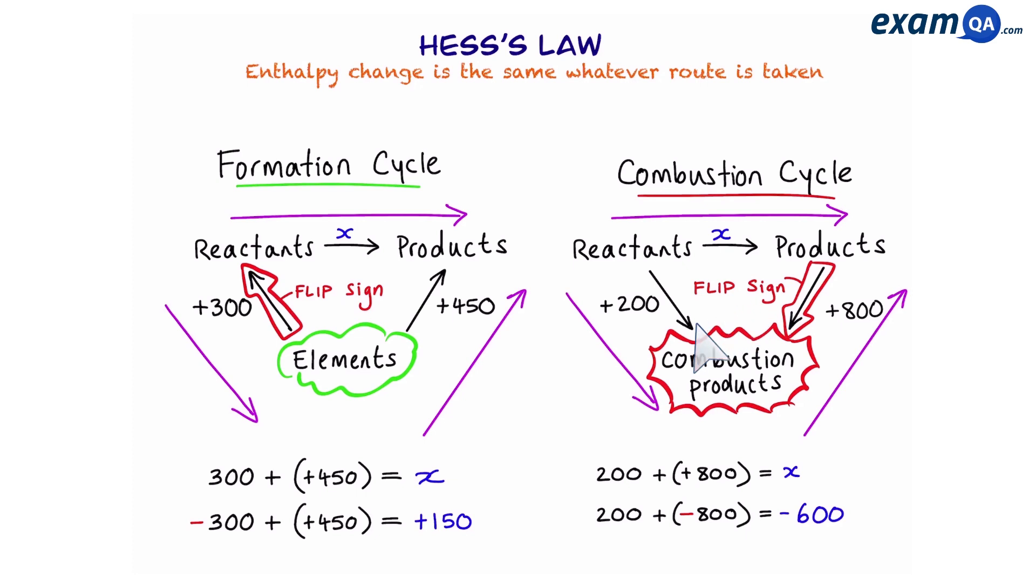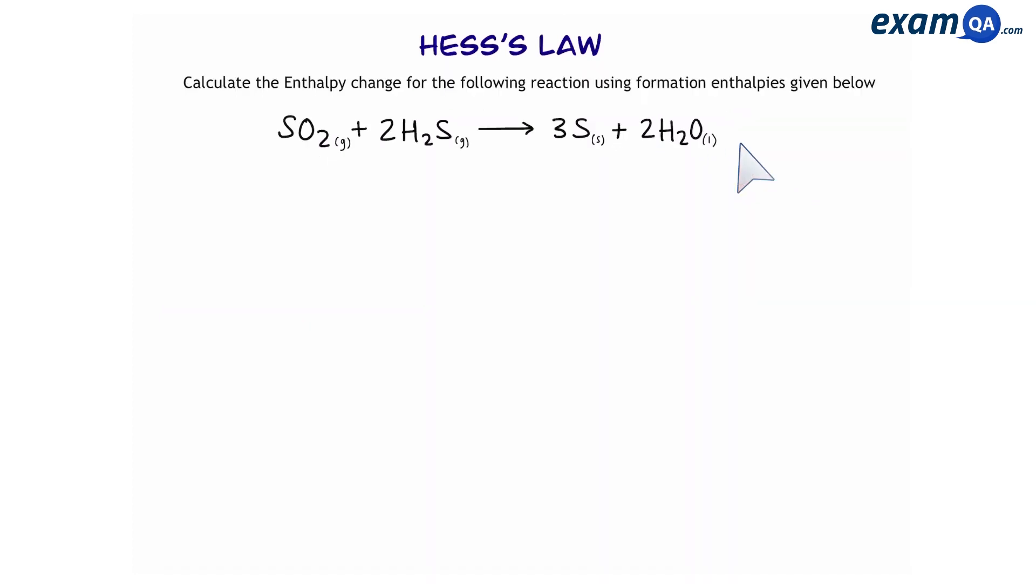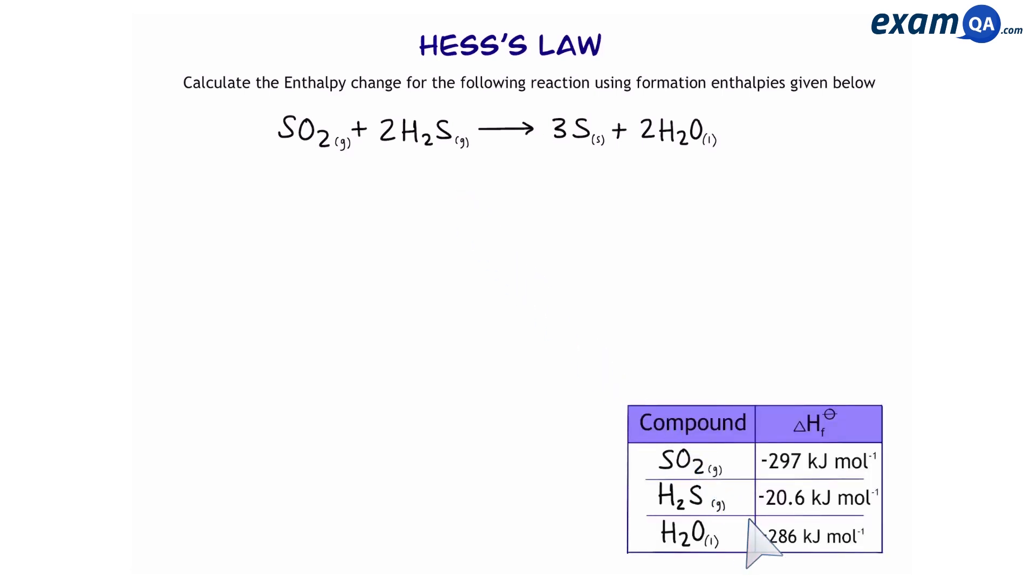Now, the next question is, which cycle do we use for a question? This depends on what the question says. If it says using formation data, then you use a formation cycle. Or if it says using combustion data, then we have to use a combustion cycle. So let's try this question together. We want to work out the value for the enthalpy change of this reaction given to us. And the question says, you've been given formation enthalpies. So because we've been given formation enthalpies, we're going to make a formation cycle. This means we're going to put elements at the bottom. Now, these elements are the ones that we have in the reaction above.